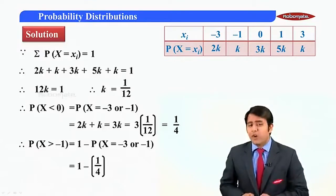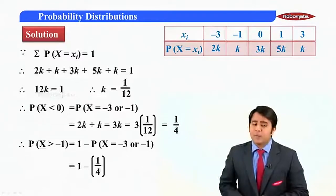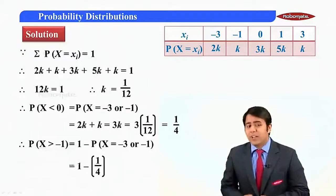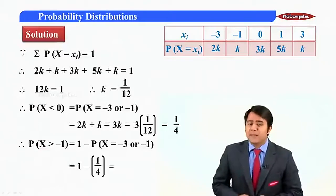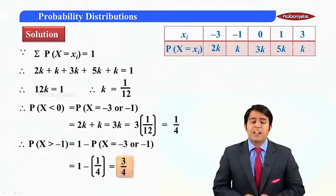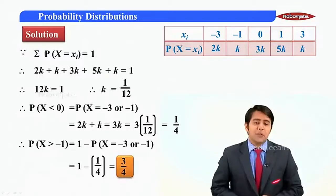Here, just now we have obtained the value for p of x equal to minus 3 or p of x equal to minus 1. This is 1 by 4. Substituting the value here, I get the simplified result as 3 by 4. Therefore, p of x greater than minus 1 is nothing but 3 by 4.